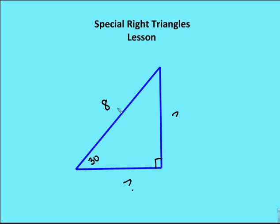Another problem — now I'm dealing with a hypotenuse. I have a 30-60-90 triangle set up in a similar orientation where the hypotenuse is 8, so x is going to be 4. The side opposite the 30-degree angle is half of the hypotenuse, and the side opposite the 60-degree angle is going to be half the hypotenuse times root 3.